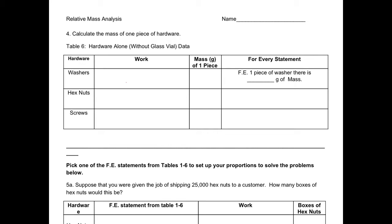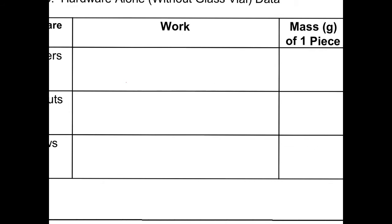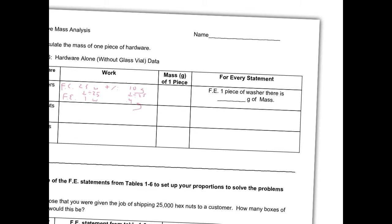This next part asks us to calculate the mass of just one piece of hardware — one washer. Going back to the first table, for every 25 washers there is 10 grams. I want to know it for just one washer. To get from 25 to 1, divide by 25, which means dividing 10 by 25, giving 0.4 grams. So for every one washer there is 0.4 grams.